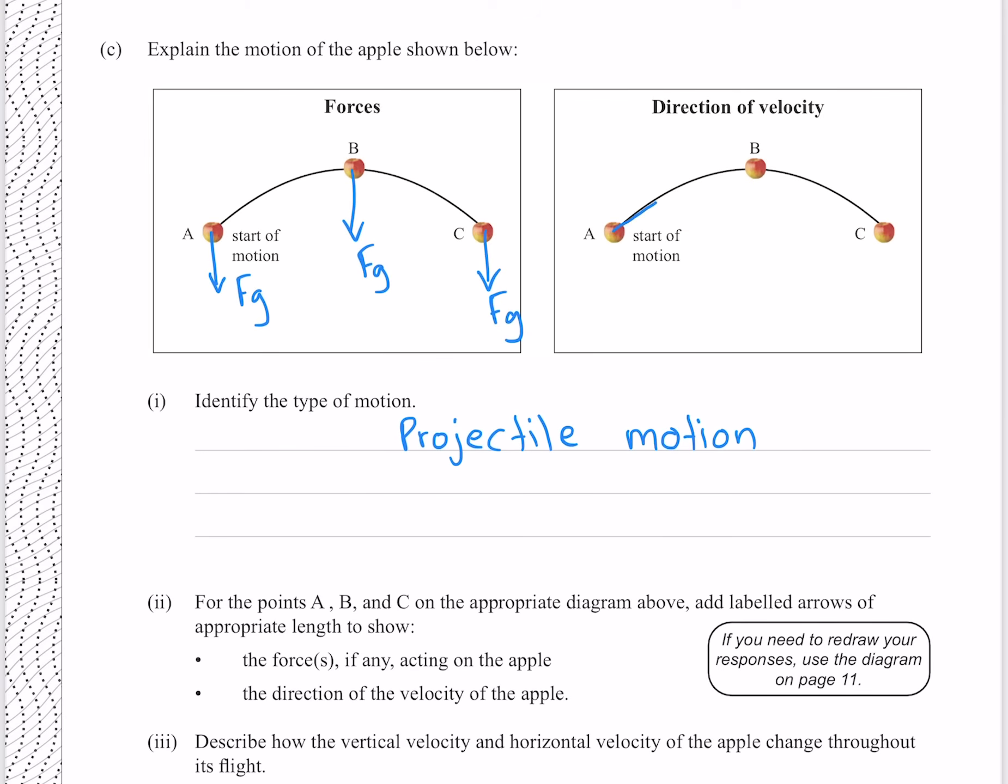The direction of the velocity of the apple at the start of its motion is at any point going to be at a tangent to the path, at the start of the motion that is this direction here, and at the finish of the motion that is this direction here. In between our direction is tangential like this, and the arrow is smaller, because although the horizontal velocity is the same in all cases, the vertical velocity is zero at the top, and so the overall velocity at B will be smaller.